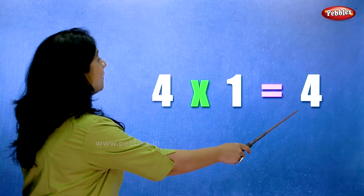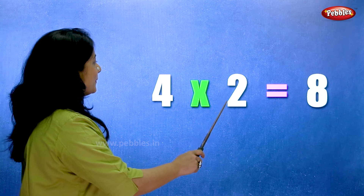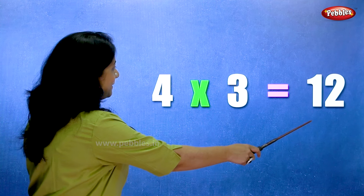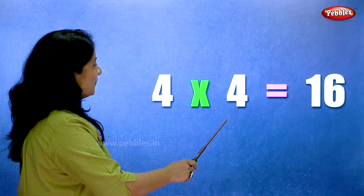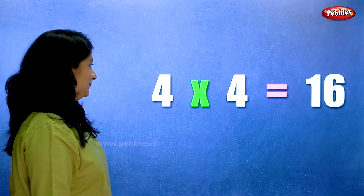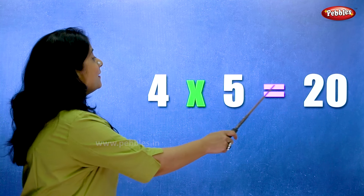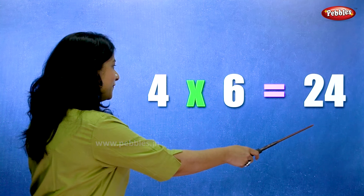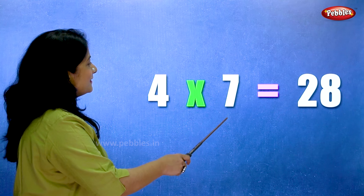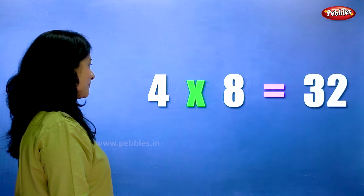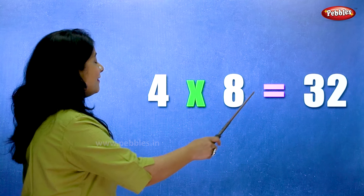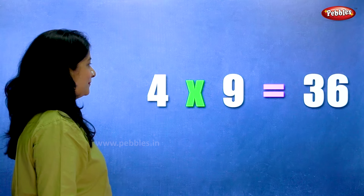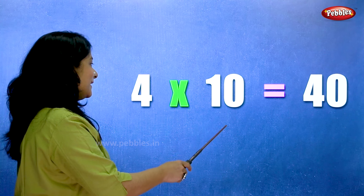4 ones are 4. 4 twos are 8. 4 threes are 12. 4 fours are 16. 4 fives are 20. 4 sixes are 24. 4 sevens are 28. 4 eights are 32. 4 nines are 36. 4 tens are 40.